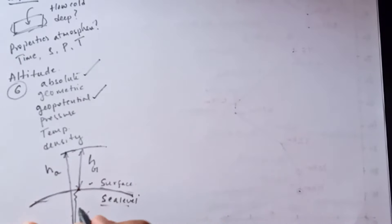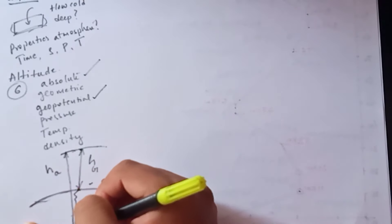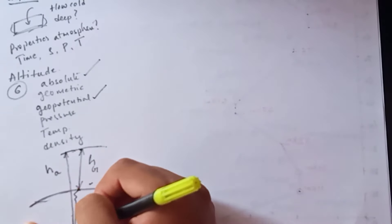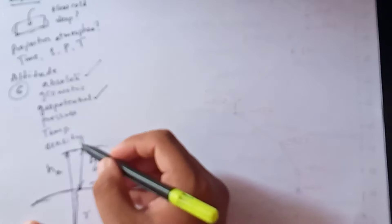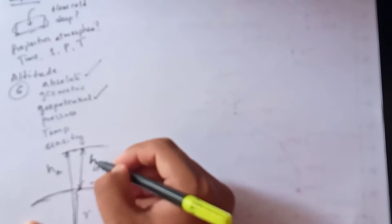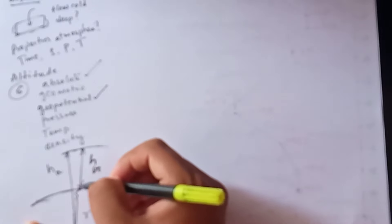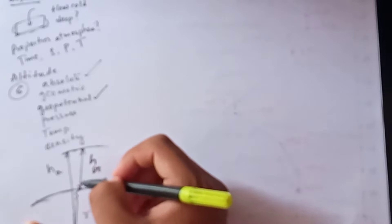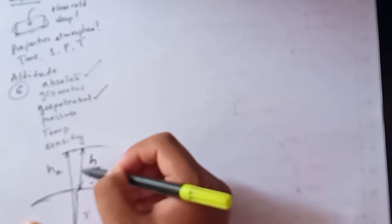If we drop a tape from here to the radius of the earth, that is defined as the geometric altitude, h_g. The measurement above the ground is called geometric altitude.